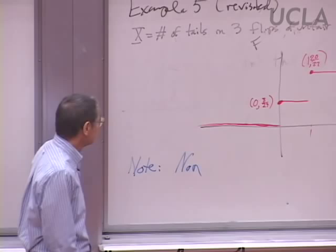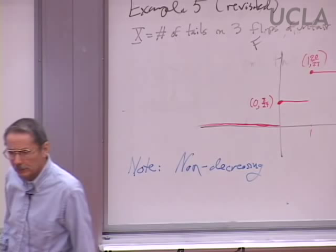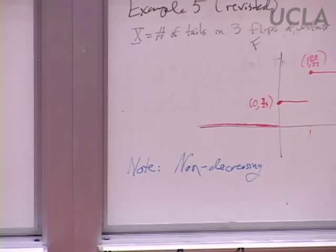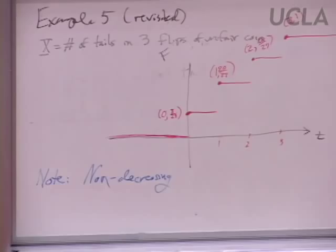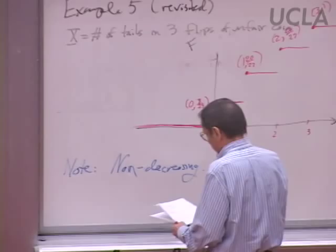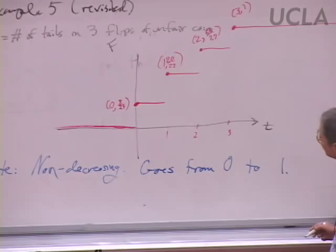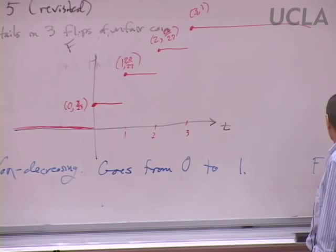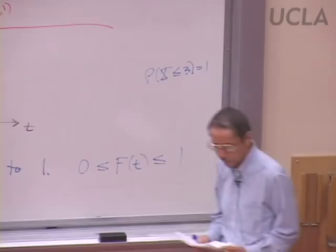Some properties of the cumulative distribution function: it's non-decreasing. Sometimes it's constant for an interval, but it can't go down, because events have positive probability. The probability of being less than or equal to three couldn't be more than the probability of being less than or equal to seven. It's a non-decreasing function and its values are always in the closed interval from zero to one.